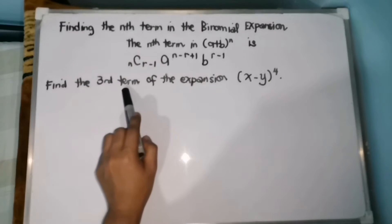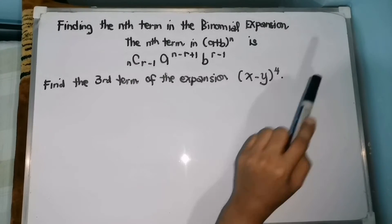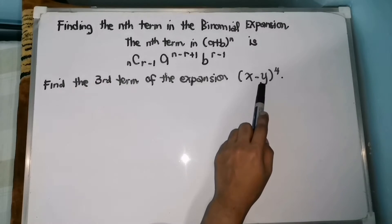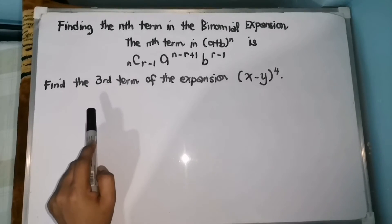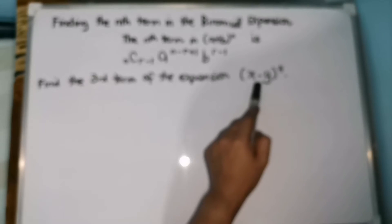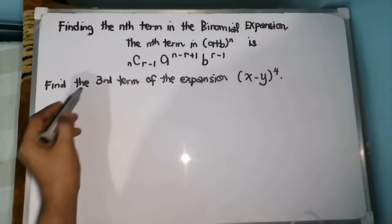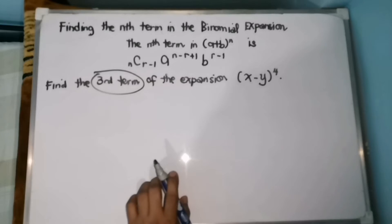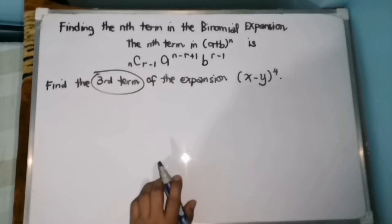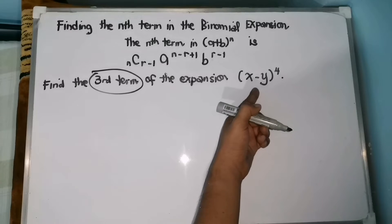Example: find the third term of the expansion, the quantity x minus y to the fourth power. So, instead of multiplying x minus y to the fourth power four times or by applying the binomial theorem to get the full expansion, we are going to use the concept because we're just looking for the third term. But before that, para ma-compare natin whether our mathematical concept is correct, i-expand muna natin itong x minus y to the fourth power.